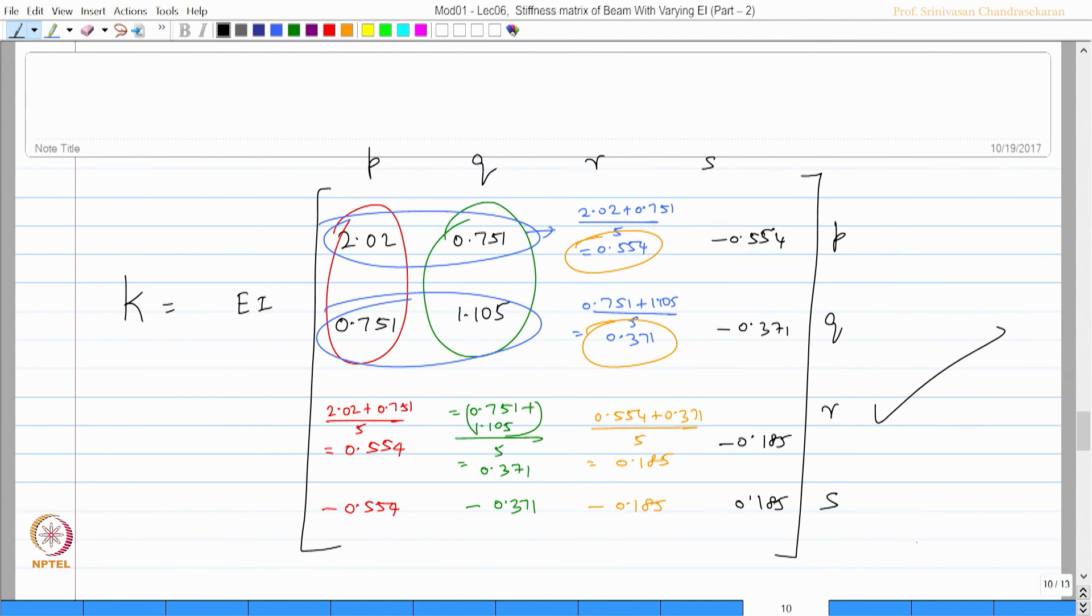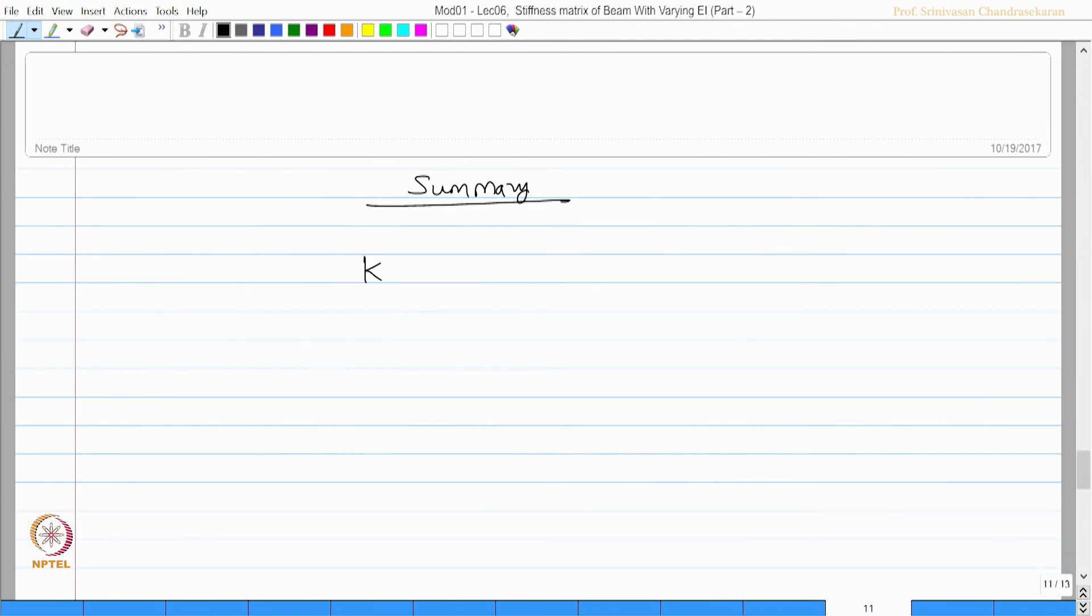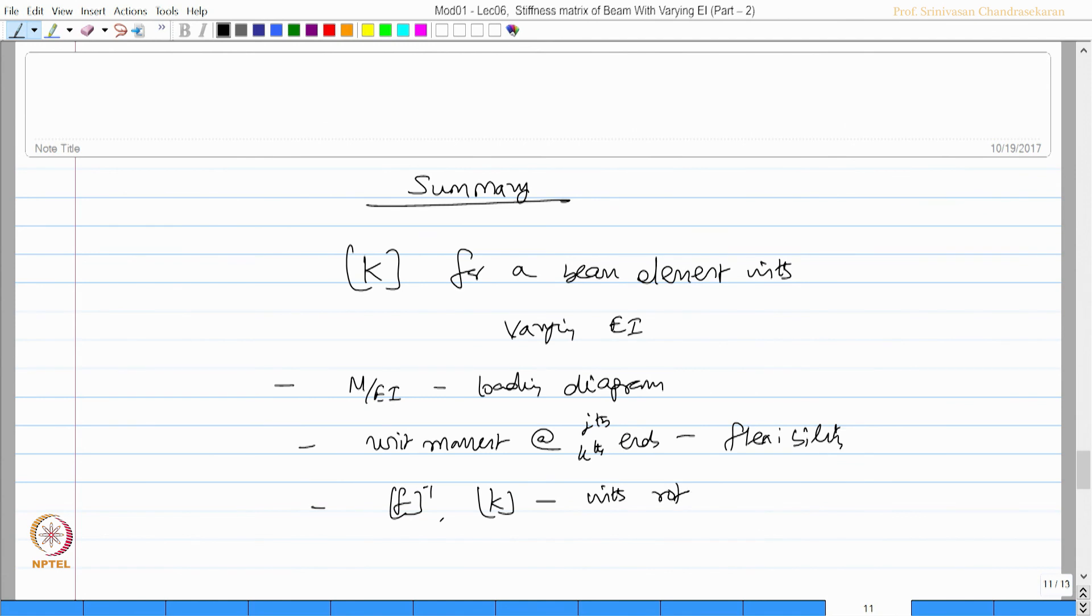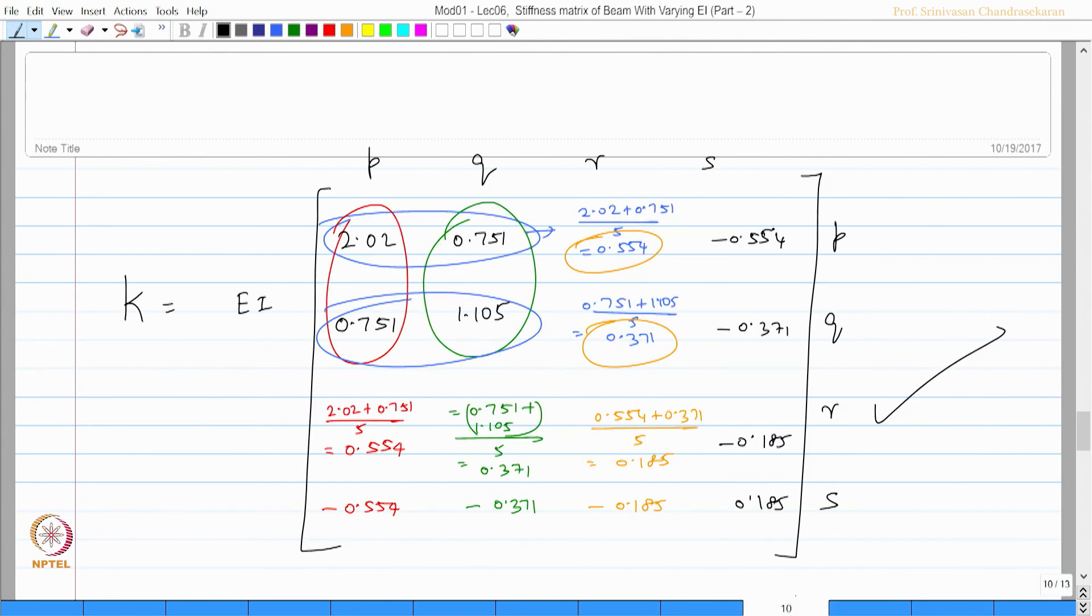So friends, in this lecture, we learned how to find the stiffness matrix for a beam element with varying EI. We actually marked the M by EI diagram as the loading diagram. M by EI was formed by giving unit moment at j-th and k-th ends. So I get flexibility coefficients. So by inverting the flexibility matrix, I get stiffness matrix with rotational coefficients.